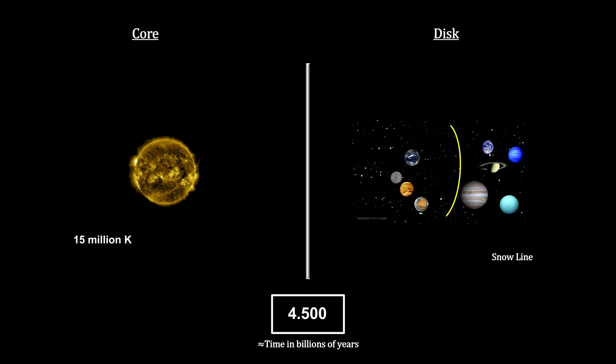In addition, as the Sun heated up, the snow line moved out to where we find it today, just outside the asteroid belt. This line separated the four waterless inner solar system planets from the five water-rich outer solar system planets.